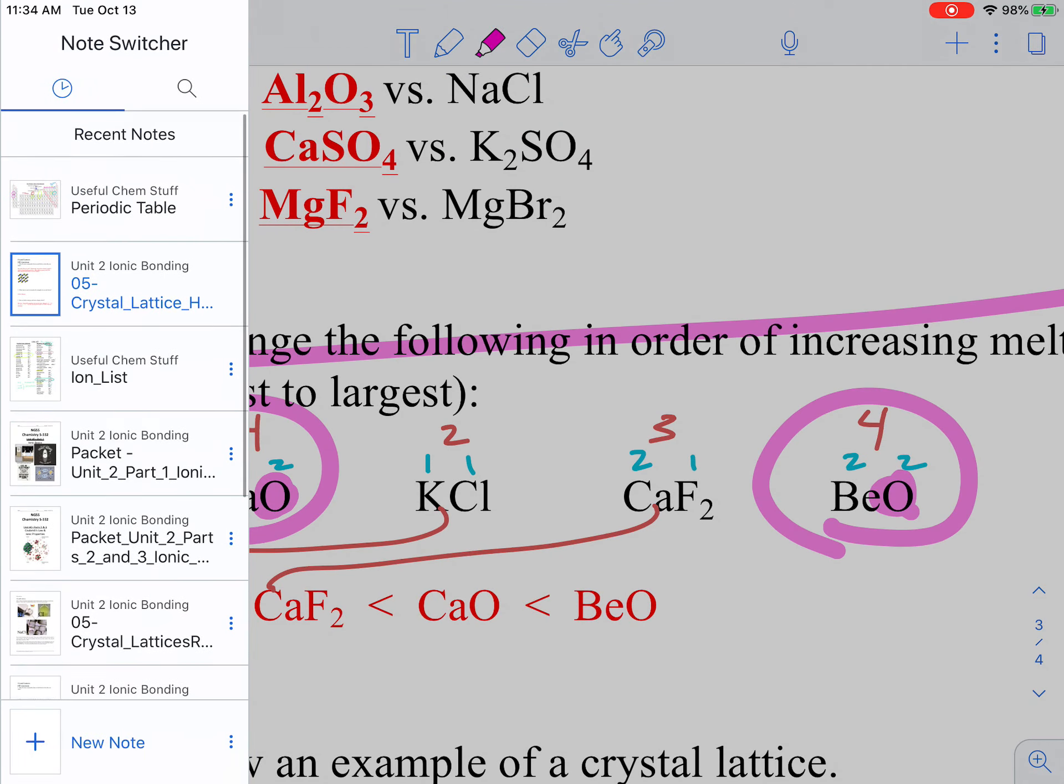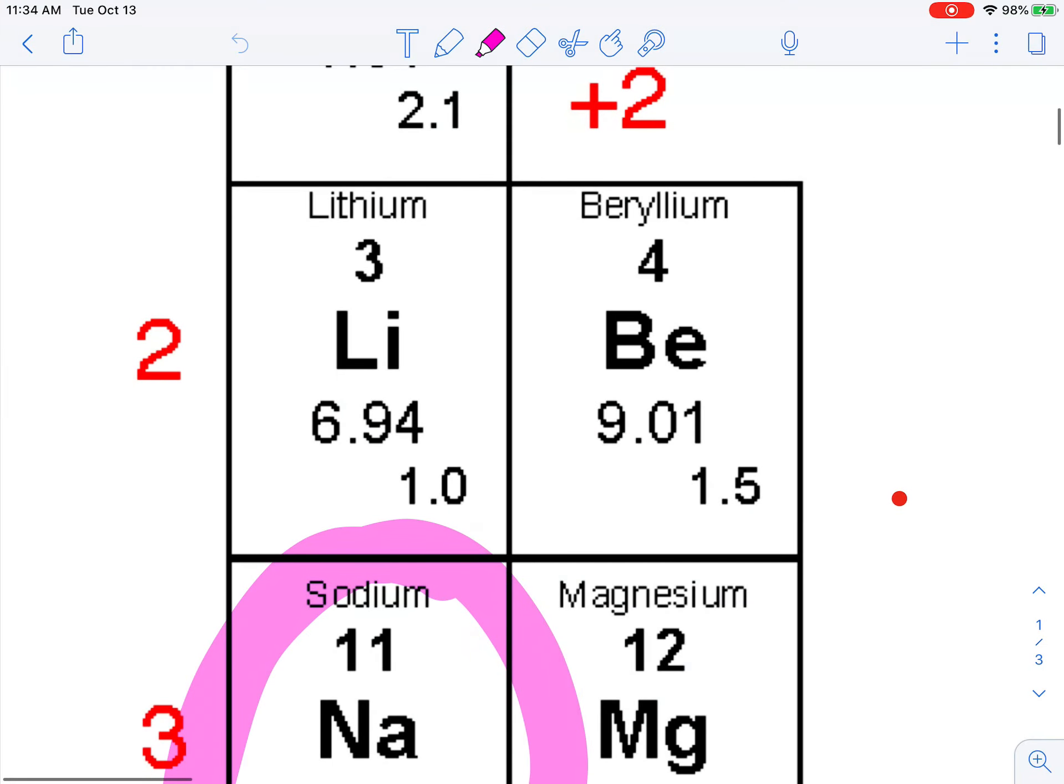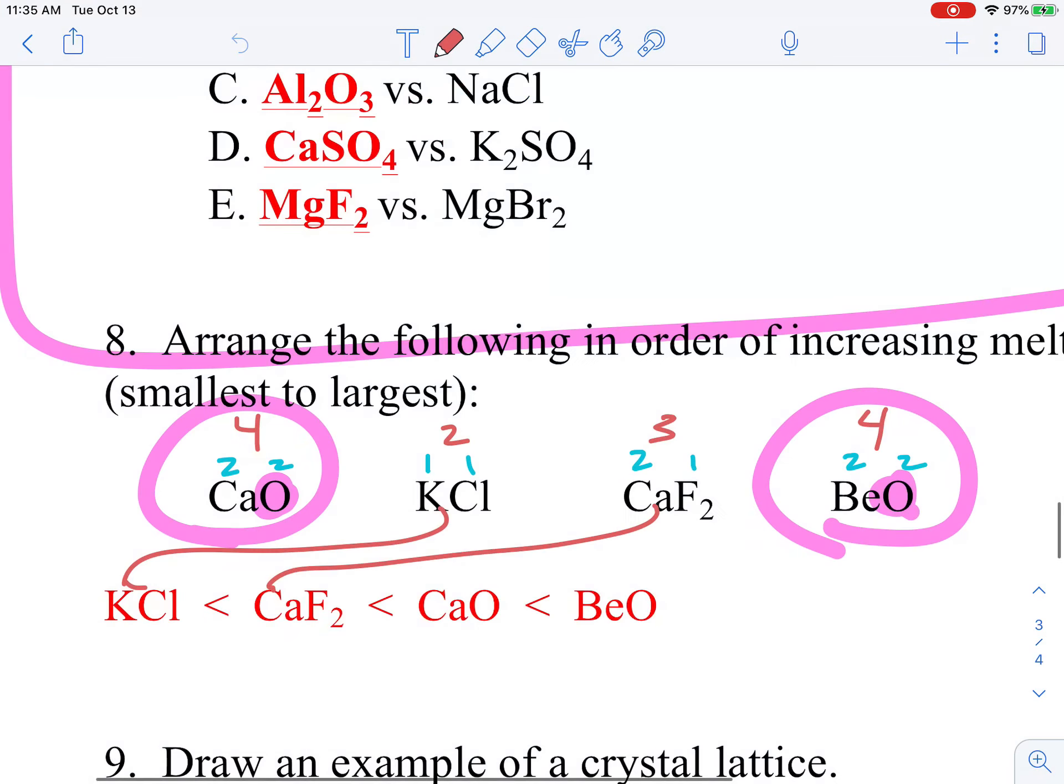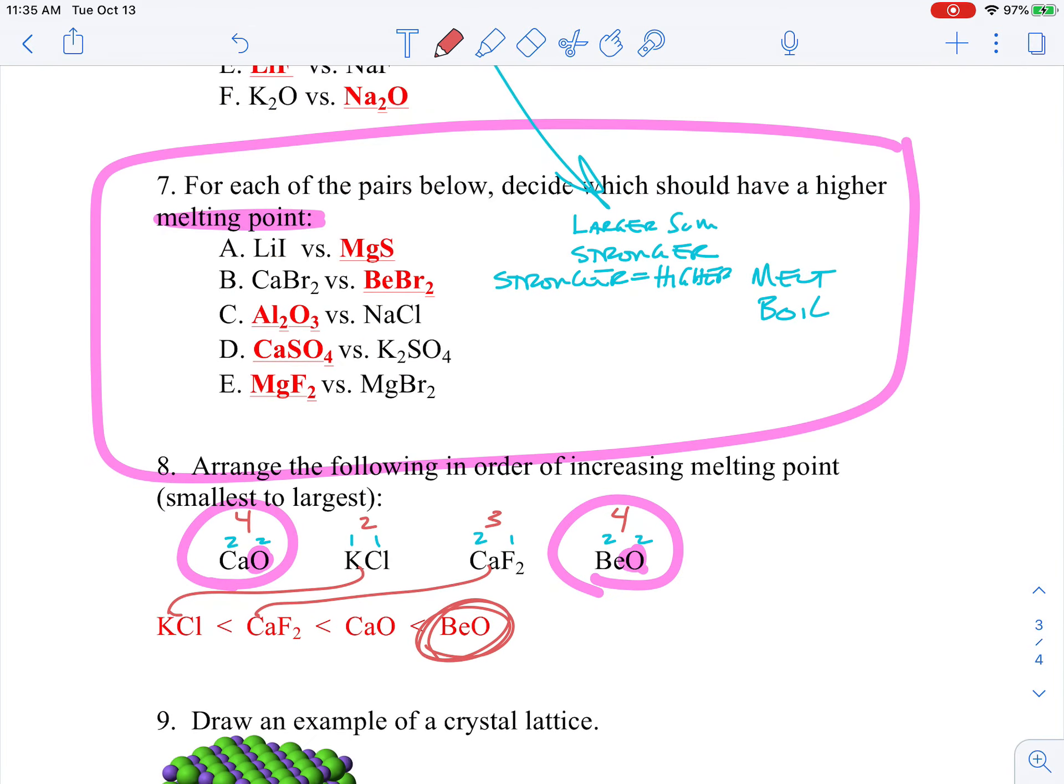So I go back to my periodic table and I find Ca and I find Be, which is right here. And so this is my higher one. So the higher it is on the periodic table, the higher the charge. So that's why this one has the higher charge because it's higher on the periodic table.